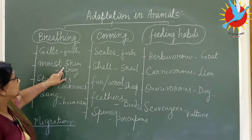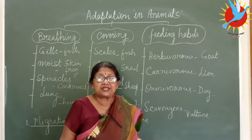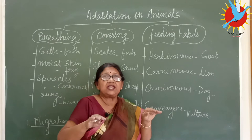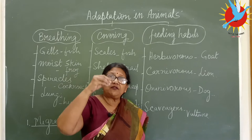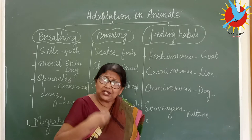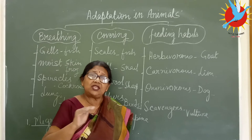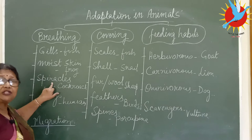The next adaptation is moist skin, seen in frogs. During hibernation — the long winter sleep — and aestivation — the long summer sleep — animals hide themselves. Their skin remains moist, absorbing a little water, and the oxygen dissolved in that water is enough for survival. During hibernation, animals stop all activities except minimal breathing, using moist skin instead of lungs. Frogs have lungs but do not use them during this time.